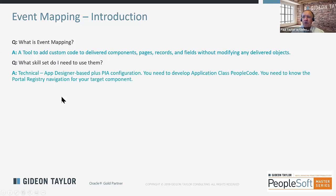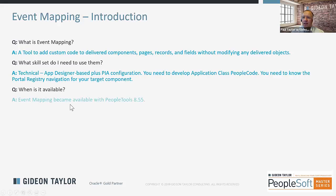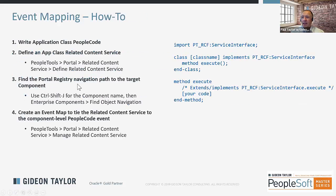The skill set that you need for event mapping is technical. This is an App Designer-based configuration plus PIA. You will be developing application class PeopleCode, and you need to know the portal registry navigation for your target component. It's available starting in PeopleTools 8.55, so it's been around a while.